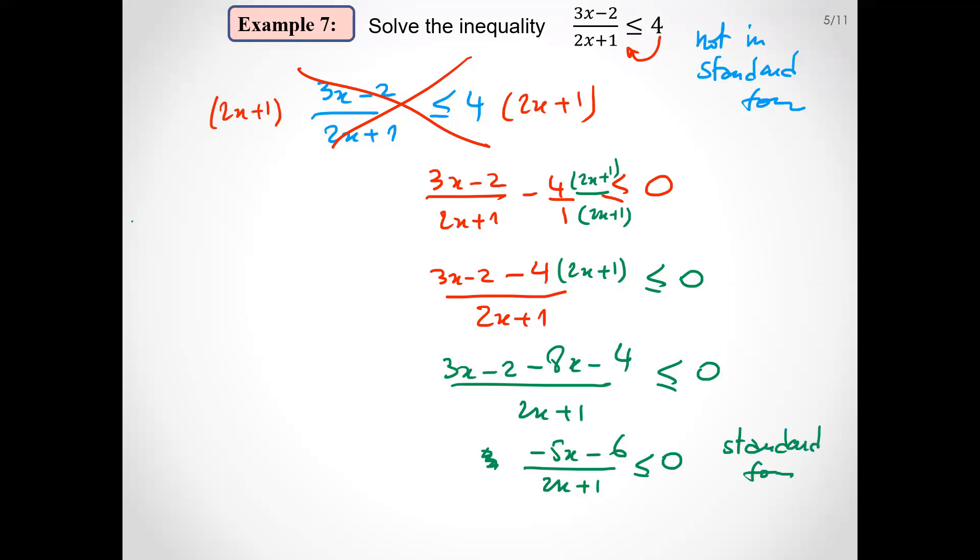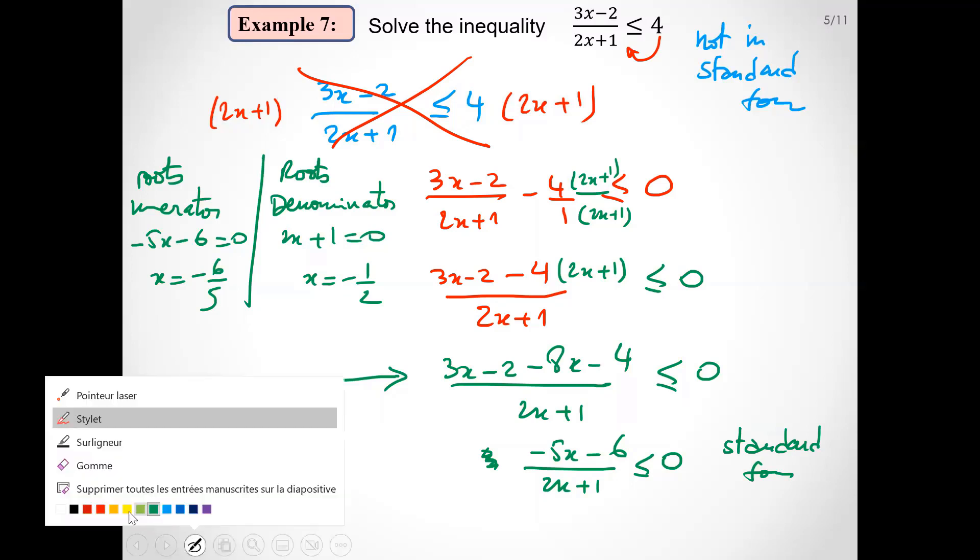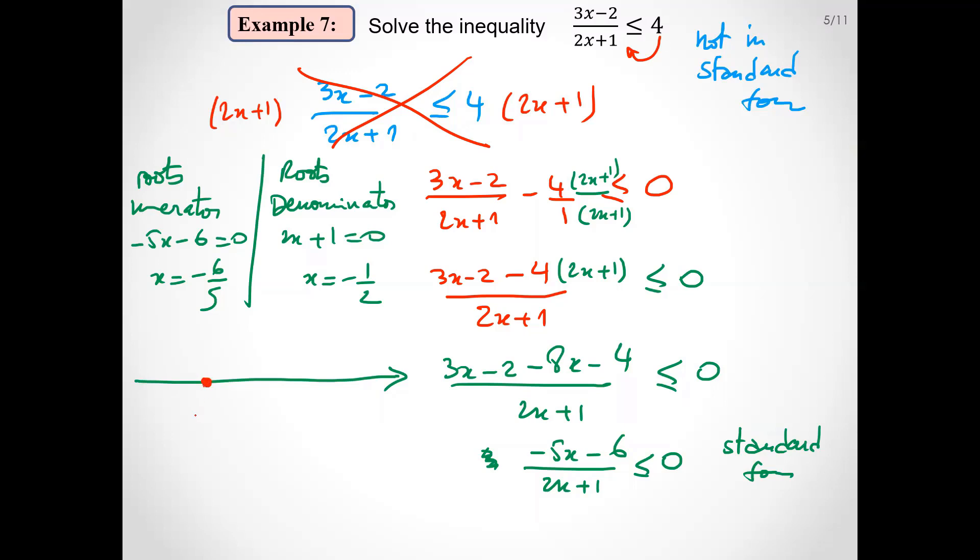This is step 1. Then find the roots of numerator and denominator. For the numerator, minus 5x minus 6 equals 0 when x equals minus 6 over 5. And 2x plus 1 equals 0 when x equals minus half. Draw the real line. Minus 6 over 5 is less than minus half, so we start by minus 6 over 5 here and minus half here. This must be excluded.